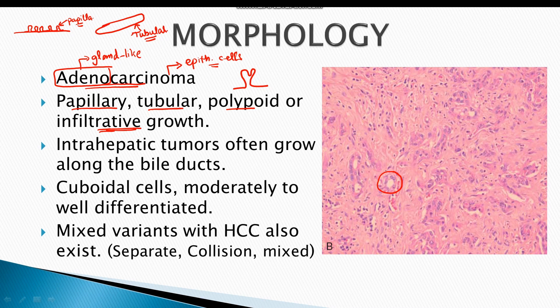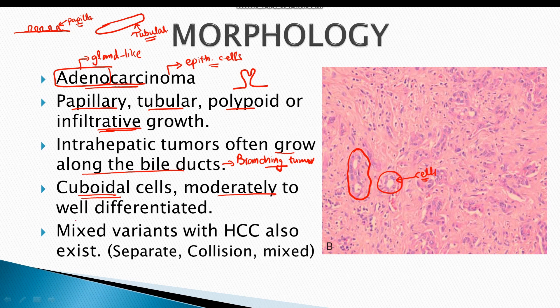Histologically, there is gland-like proliferation with malignant cells forming tubular structures composed of neoplastic cells. Intrahepatic tumors often grow along the bile duct, forming a branching tumor contained within the ductal lumen. The neoplastic cells are cuboidal cells ranging from moderately to well-differentiated, meaning they resemble the cuboidal cells normally lining the bile duct. In certain cases, mixed variants with hepatocellular carcinoma also exist.